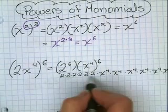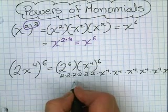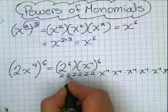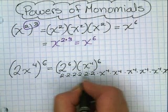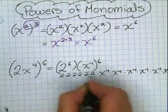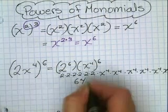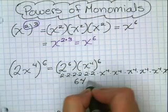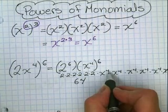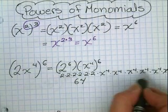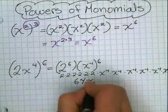We can then multiply these all together: 2 times 2 is 4, 4 times 2 is 8, 8 times 2 is 16, 16 times 2 is 32, 32 times 2 is 64. We then multiply the x's together by adding the exponents: 4 plus 4 plus 4 plus 4 plus 4 plus 4, which equals 24.